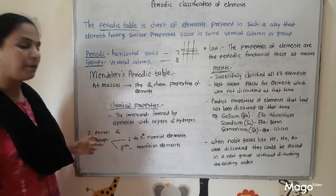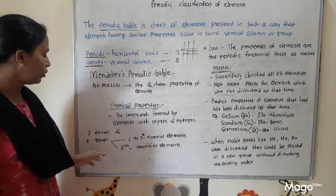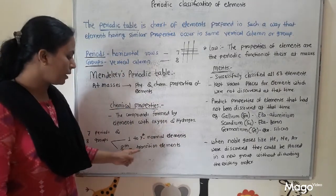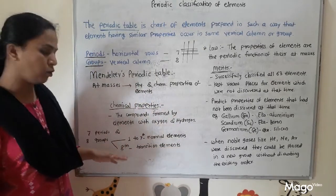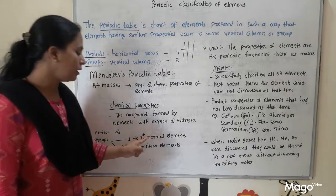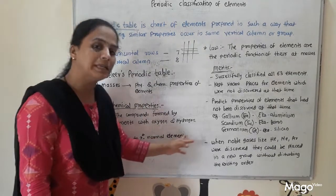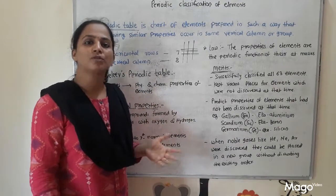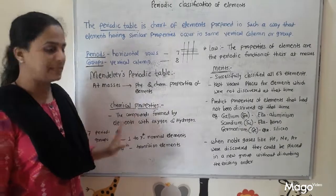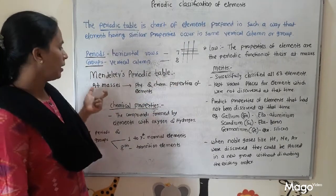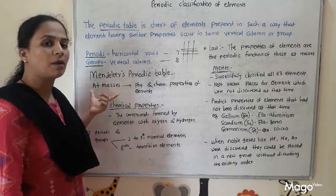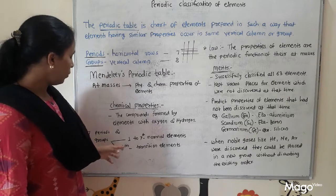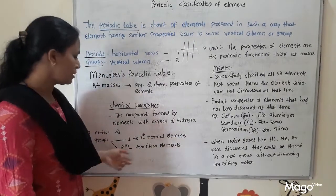Mendeleev's periodic table consists of 7 periods — that is, 7 horizontal rows — and 8 groups, meaning 8 vertical columns. Out of these 8 groups, the first 7 consist of normal elements and the 8th group consists of all transition elements present at that time. Nobel gases were not discovered at that time, so they are absent from his periodic table.